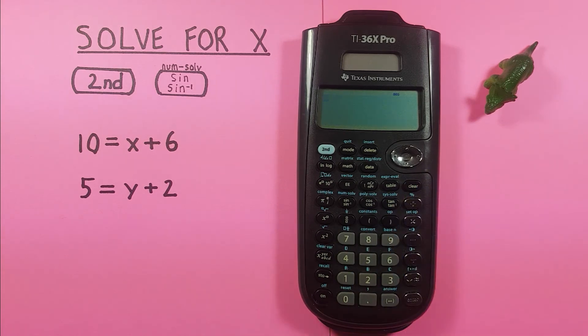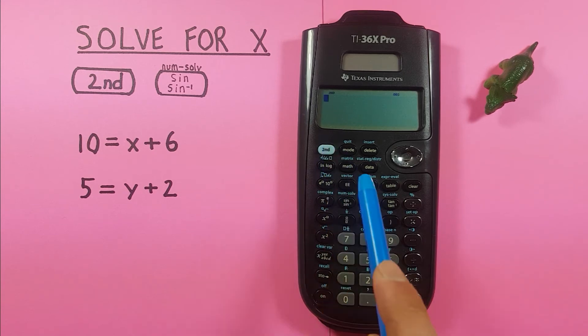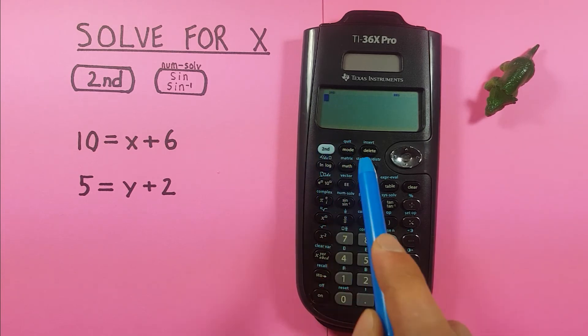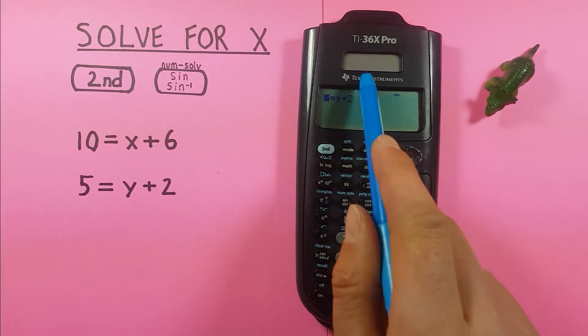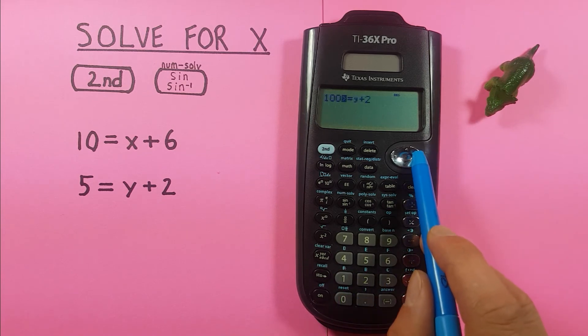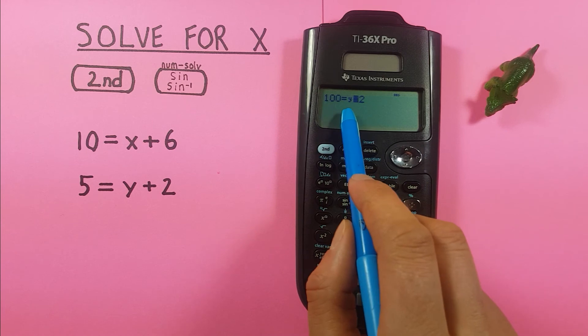You can overwrite these slots as well if you store or solve a new value with this in the same variable slot. Let's try saving a new variable into the y slot. To do this we press the second sine key again so that we're back to this screen. This time let's do 100 is equal to y plus 2 again so we have a new result there.